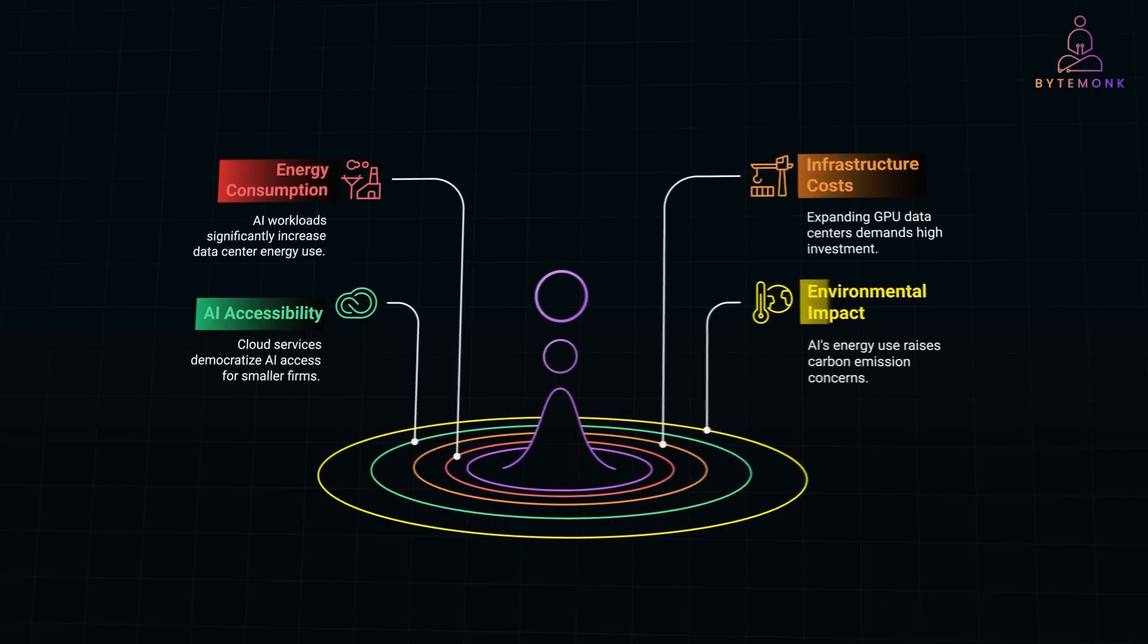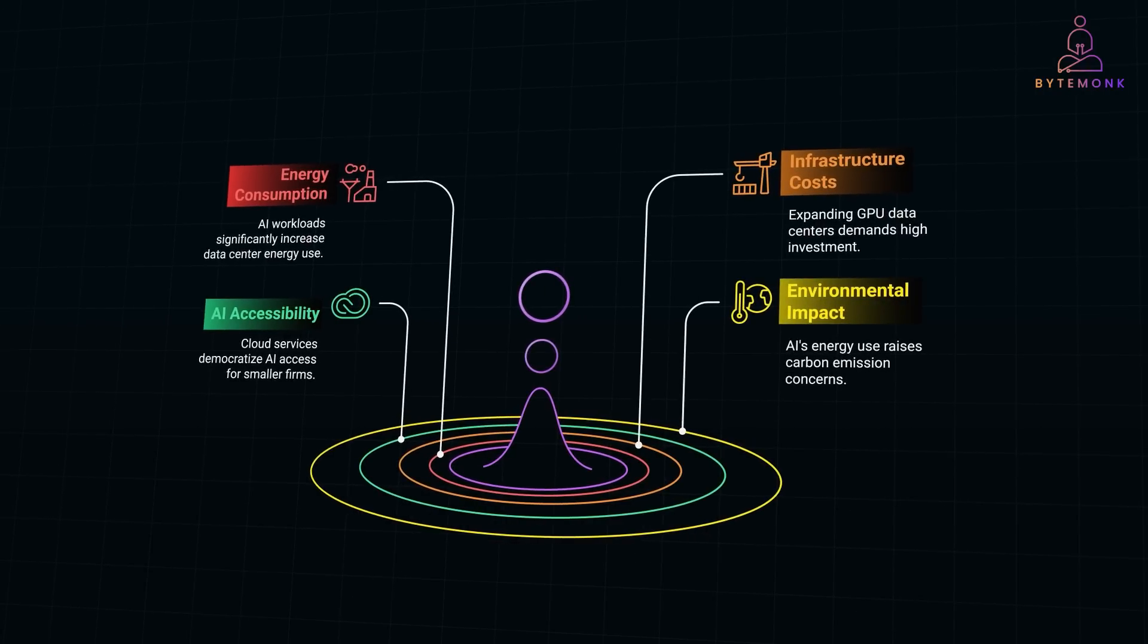But the energy demands of AI have raised concerns about its environmental impact. Training large models generate significant carbon emissions. And the industry is under pressure to find greener solutions. Some companies are exploring ways to reduce the carbon footprint of AI, such as using more efficient algorithms or locating data centers in regions with abundant renewable energy.